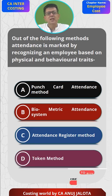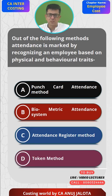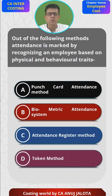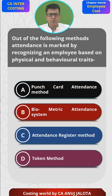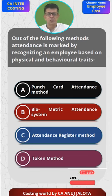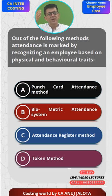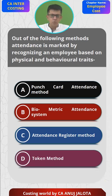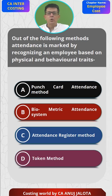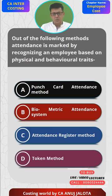In the attendance register system, whenever the worker comes he informs a person that he has arrived, and that person writes in the register that this worker came at this time. You can get attendance register books directly from a stationery shop.